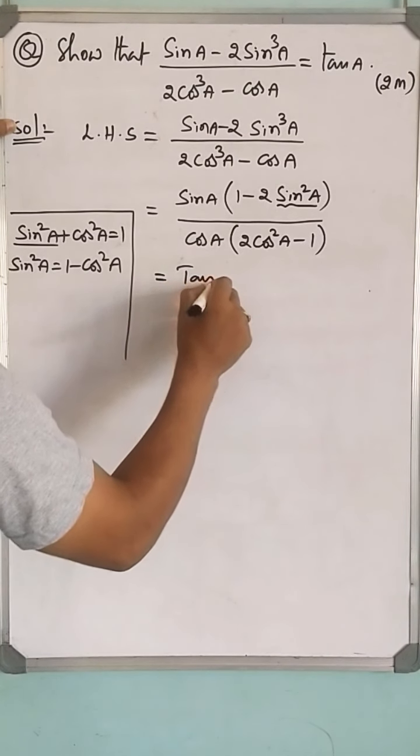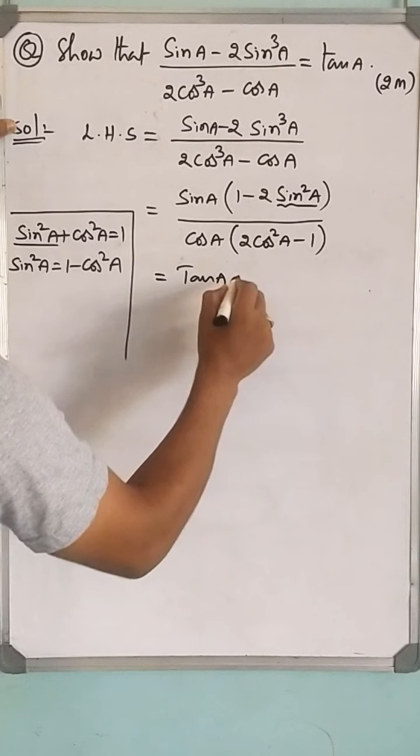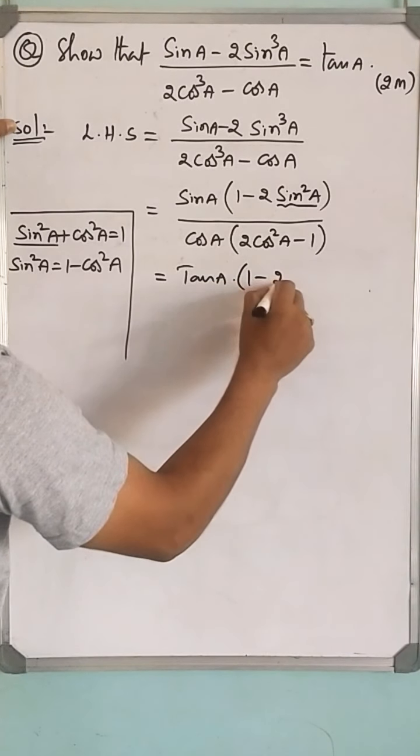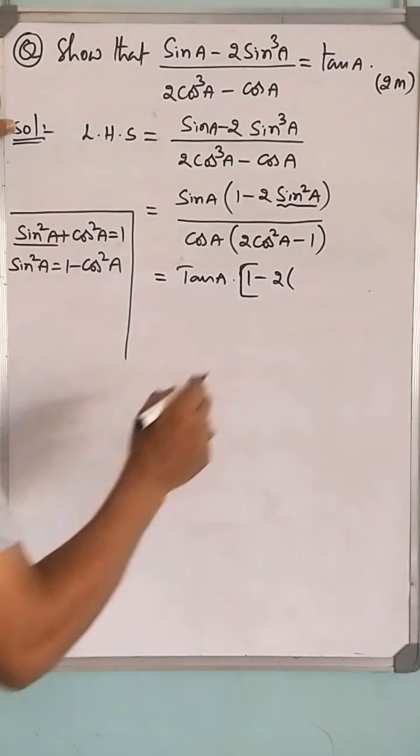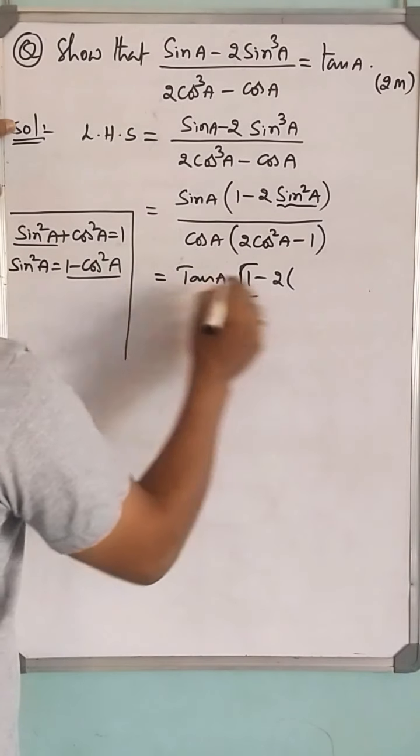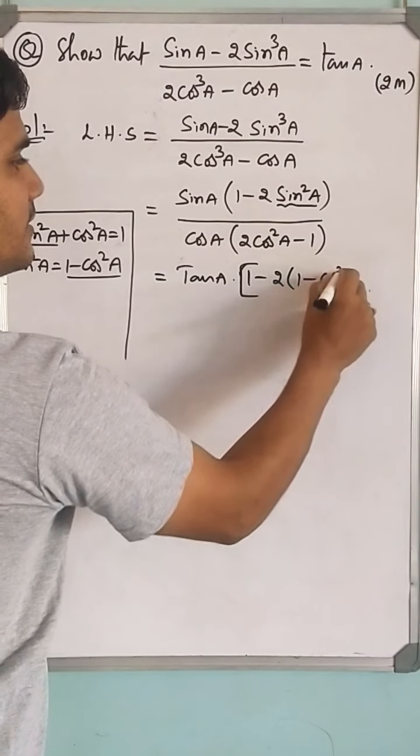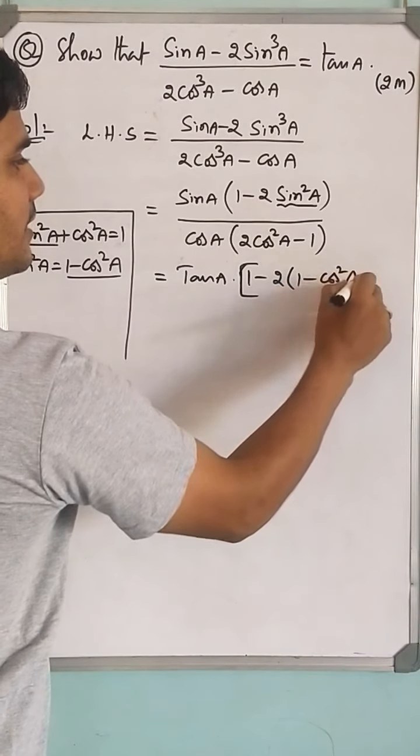This becomes tan a times (1 - 2 times, let us take the square bracket here), sin²a is replaced by (1 - cos²a) divided by (2cos²a - 1).